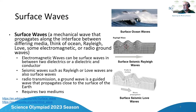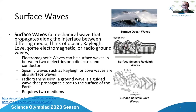Rayleigh waves are surface waves that are also somewhat transverse — direction is left to right but the wave goes up and down. Love waves are similarly transverse but go side to side as they propagate. A surface wave occurs anytime you have two mediums with the wave traveling right at the interface.